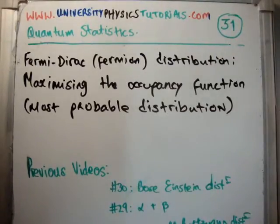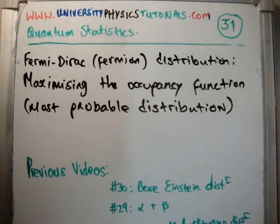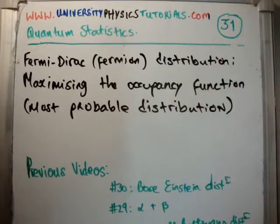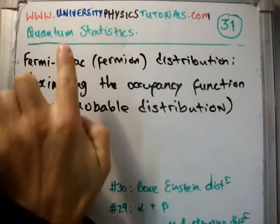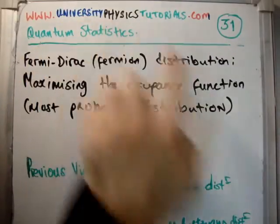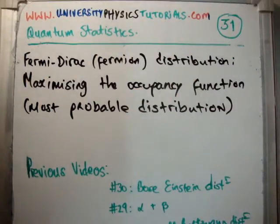In this video I'm going to continue on with my tutorials on quantum statistics. This is tutorial number 31 and I'm going to discuss the Fermi-Dirac distribution, which means we're going to maximize the occupancy function or make the most probable distribution. I'd also like to note that I have a website now: universityphysicstutorials.com.